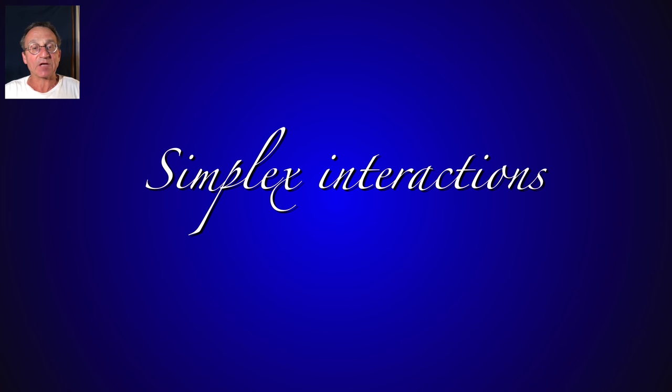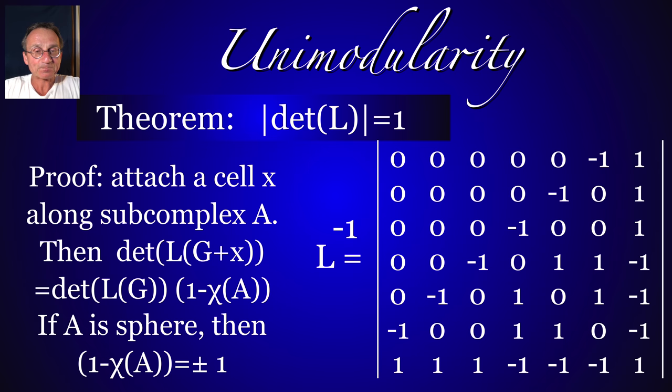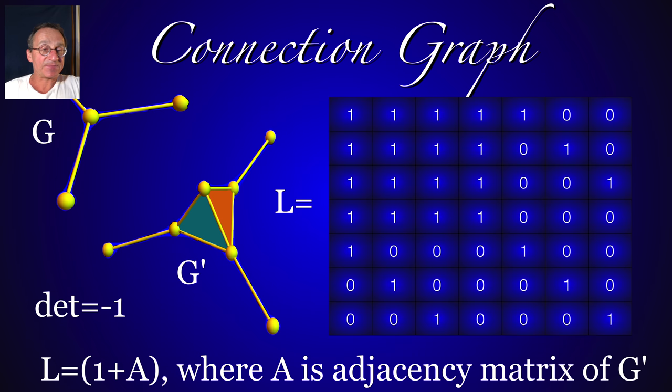Complexes are interesting when linear algebra is used to describe it. Here's a 0-1 matrix, which is 1 if two sets intersect, and 0 else. It is amazing that this matrix is unimodular. The inverse has integer entries, and it is the adjacency matrix of a graph, 1 plus the adjacency matrix of a graph, the connection graph of G.